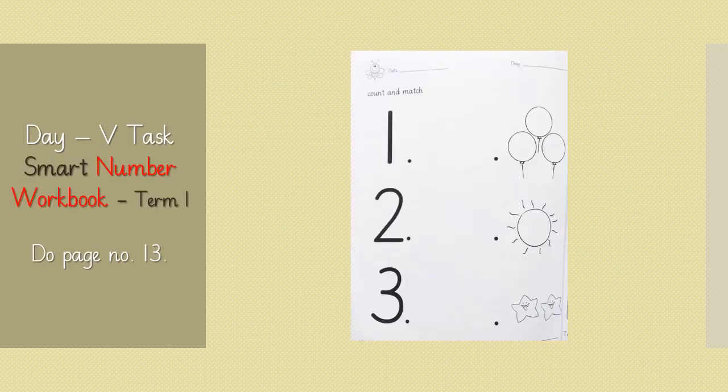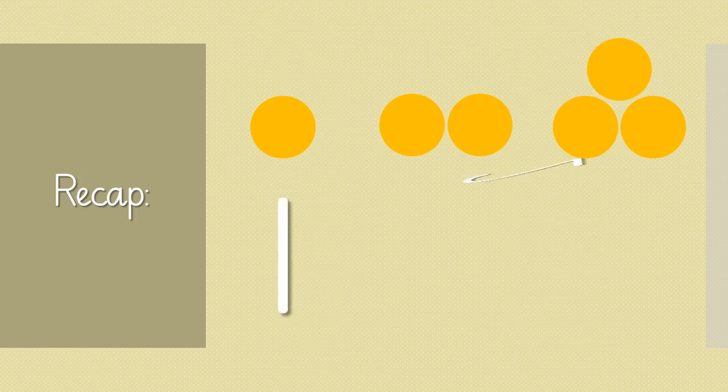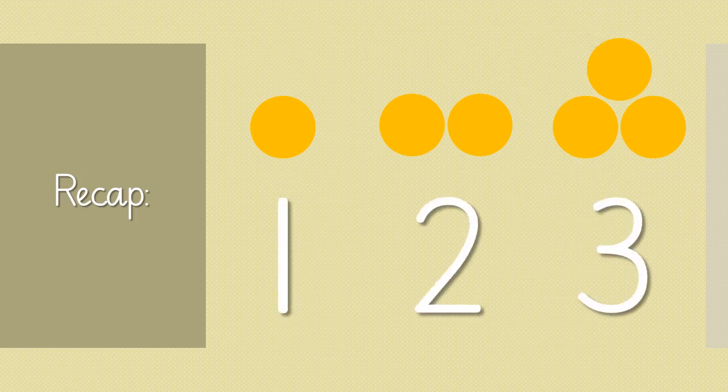This task should be done in your Smart Number workbook on page 13. You need to count the objects and match with the right number. Best of luck! Let's see what we have learned today — we have recalled the numbers 1, 2, and 3. Very good!